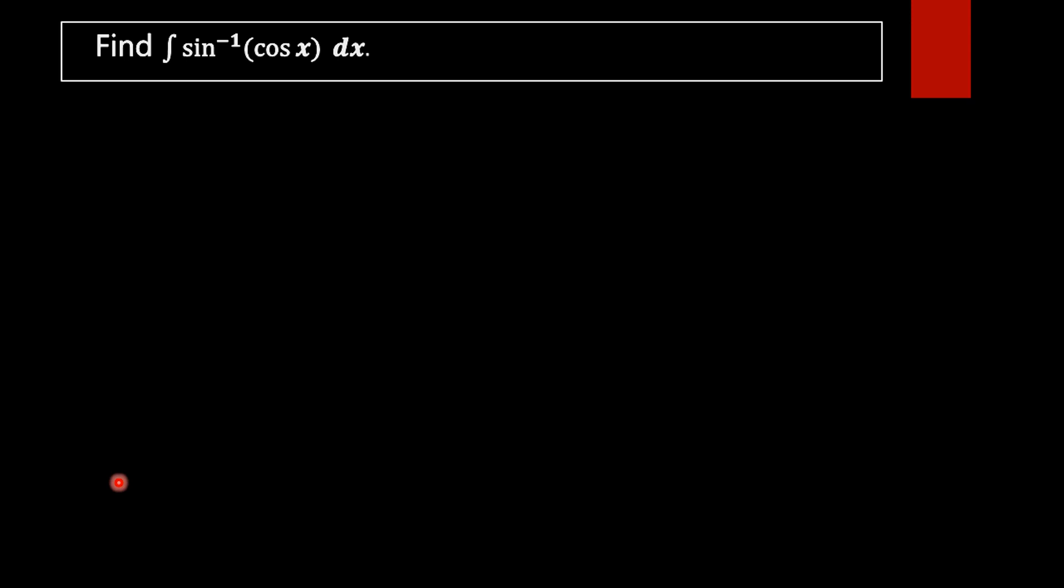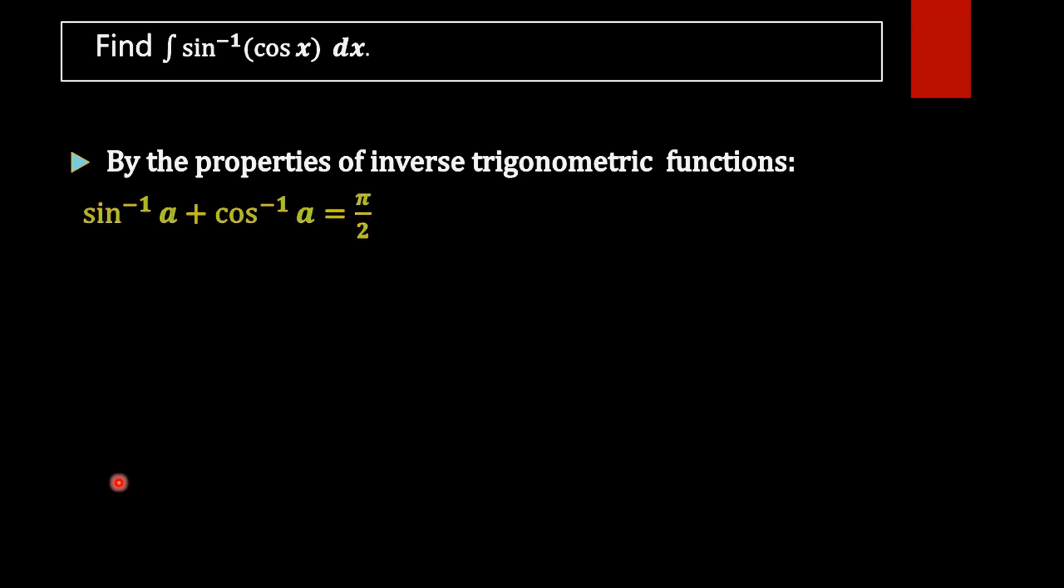we can use the properties of inverse trigonometric function. By the properties of inverse trigonometric function, we have sin inverse of a plus cos inverse of a equal to pi by 2.